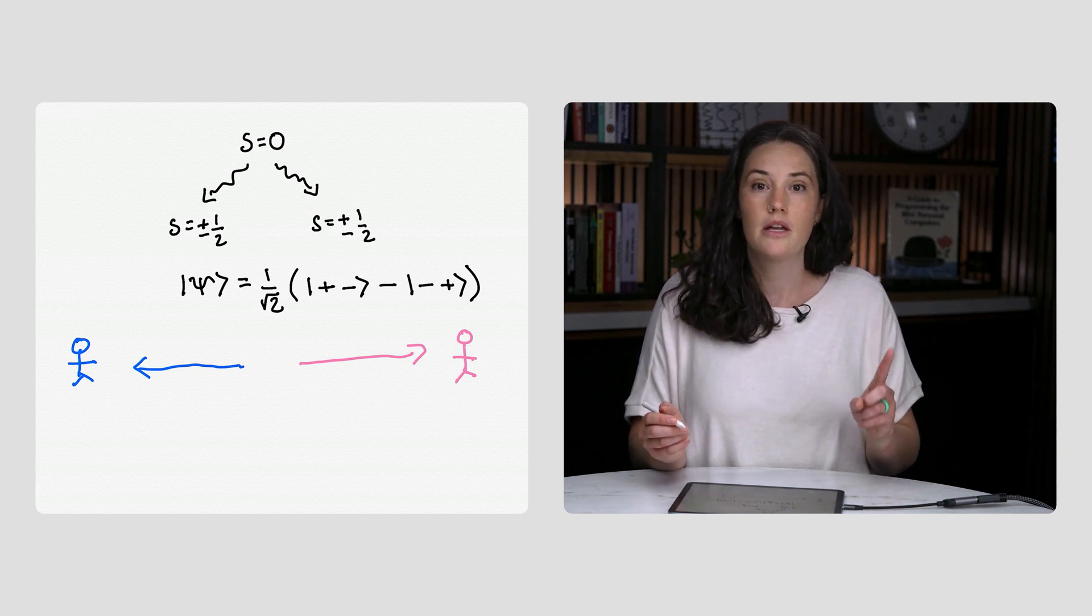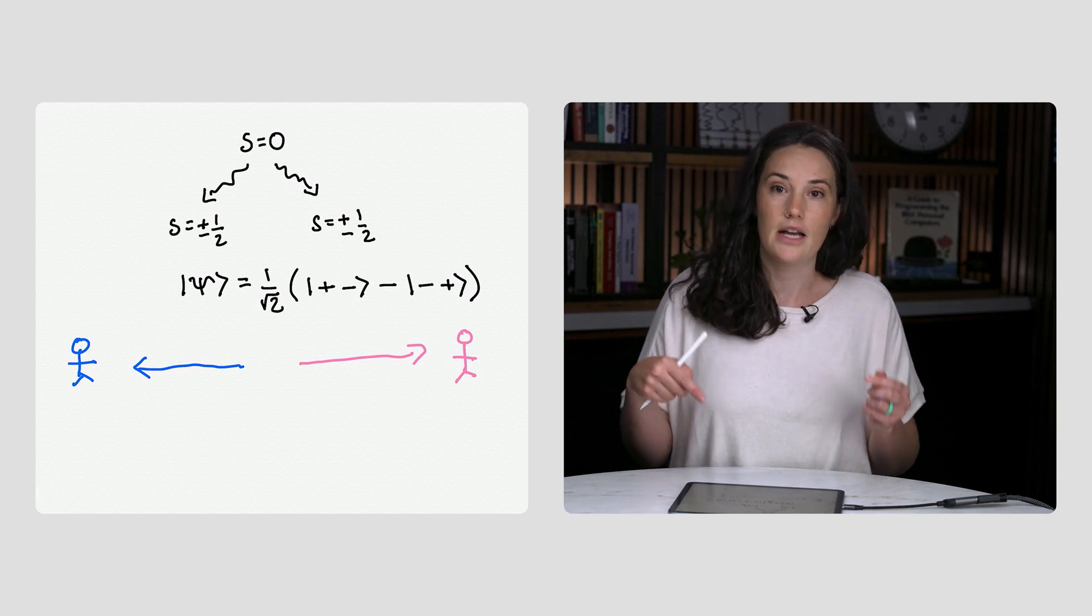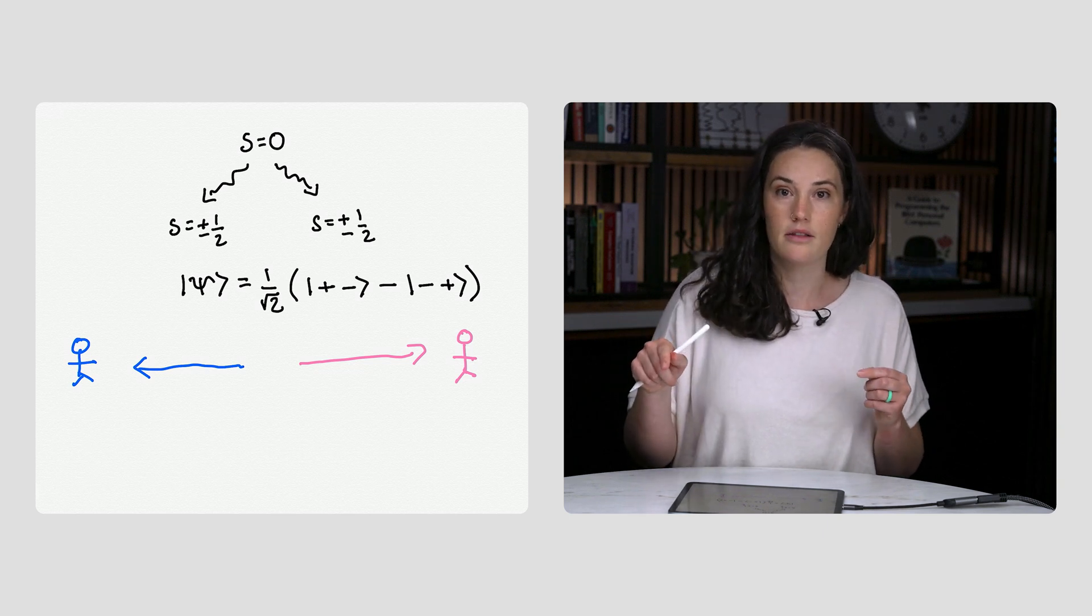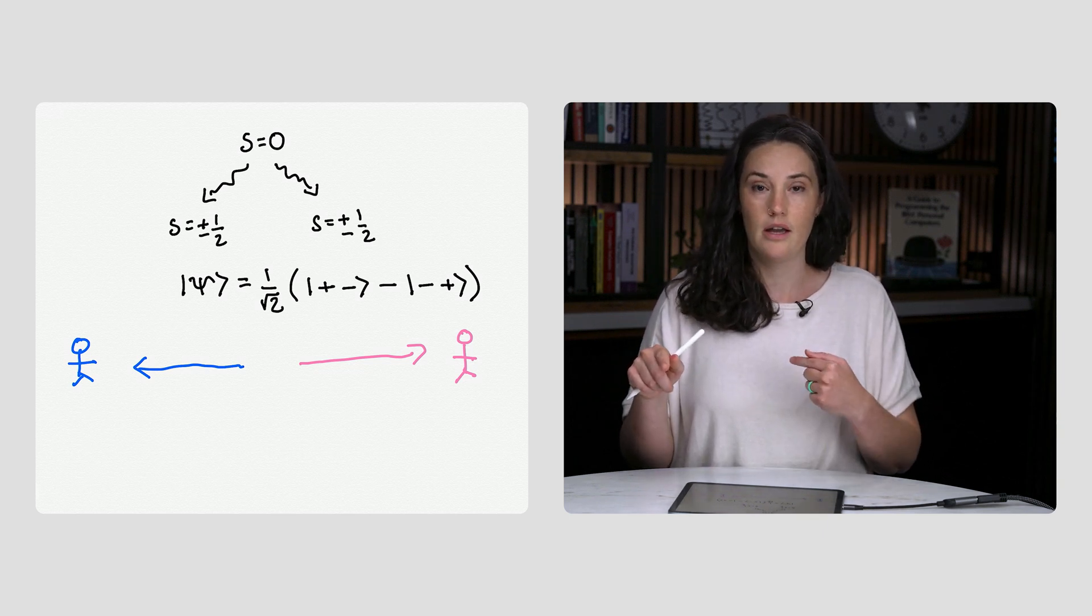Every time one measures spin up, the other measures spin down. And every time one measures spin forward, the other measures spin backward. And so on.